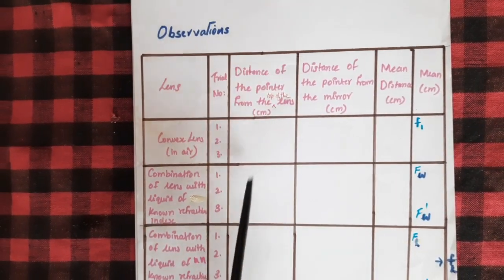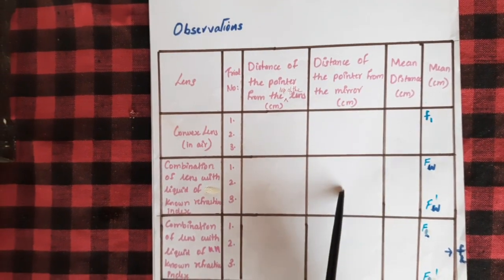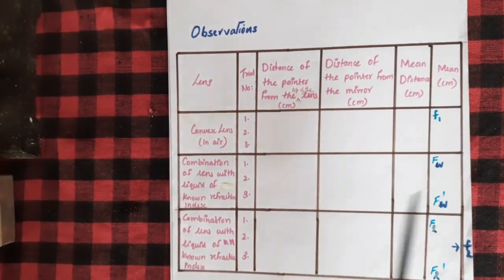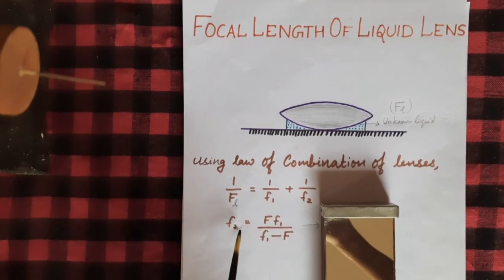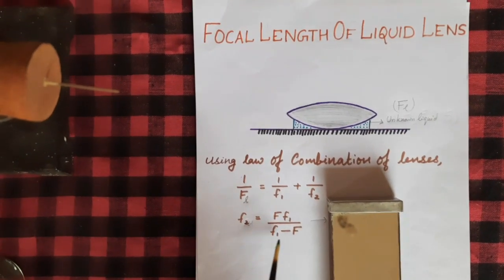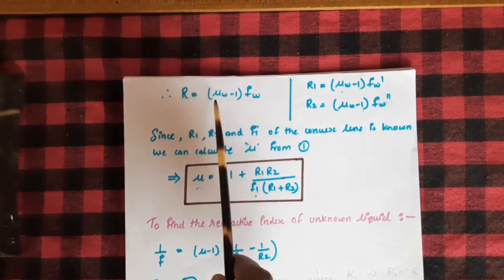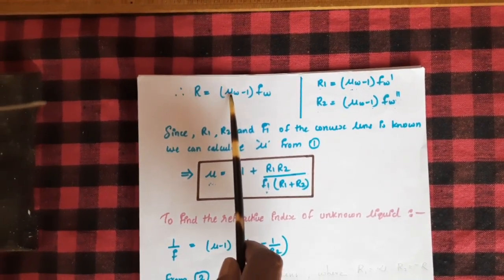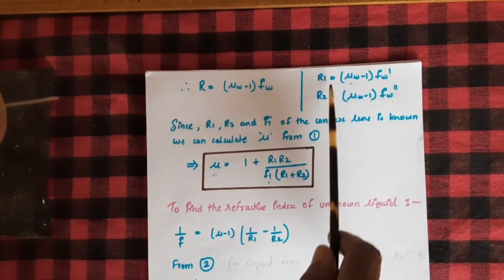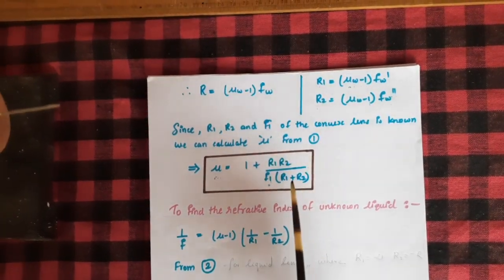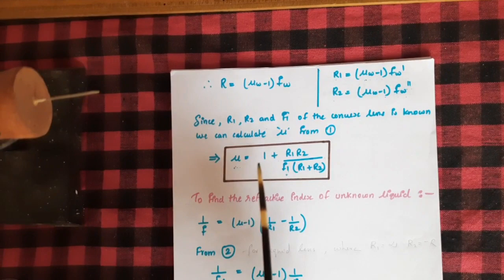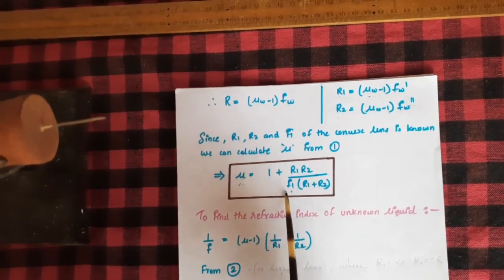The distance of the pointer from the top of the lens and the distance from the mirror give the combined focal length of the lens and the water lens. From this, fw = F·f1 / (f1 - F). Now that we have evaluated fw and we know the refractive index of water is 1.33, we use this relation to find the radius of curvature. Once R1 and R2 are found, we substitute them to find the refractive index of the material of the lens, where f1 is the focal length of the convex lens.